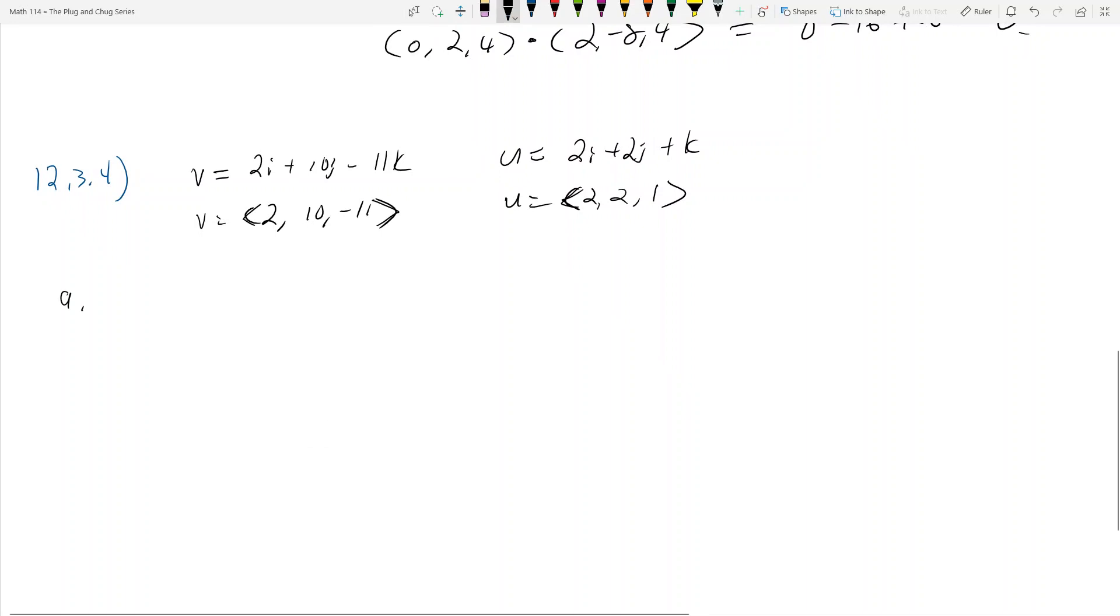Well, part a asks you to find what the dot product is. Part a asks you to find what the dot product is, v dot u. And it asks you to find what the magnitude of v is and what the magnitude of u is. And so this is pretty simple.